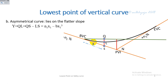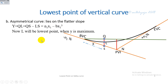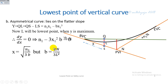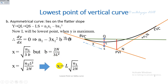For the lowest point on the valley curve, we set the first derivative equal to zero and solve, putting B = 2N / (3L²). We determine the distance X from the beginning of the vertical curve as X = L · √(N1 / 2N), which gives the position of the lowest point along the flatter slope.